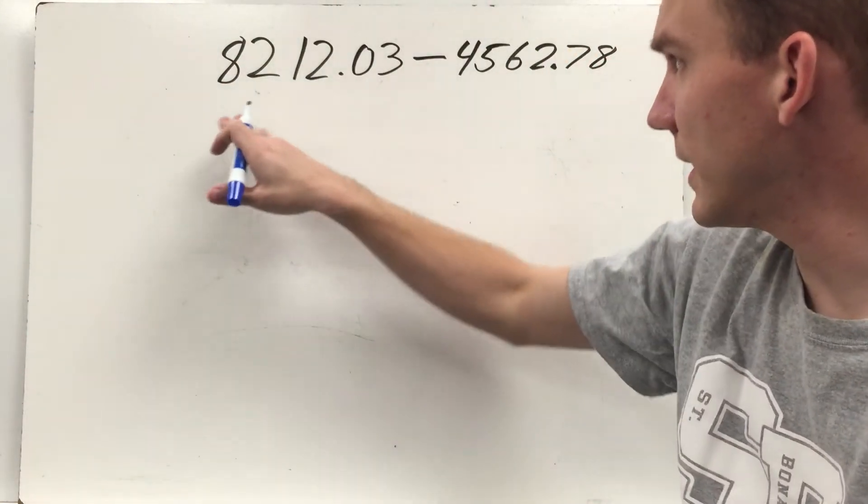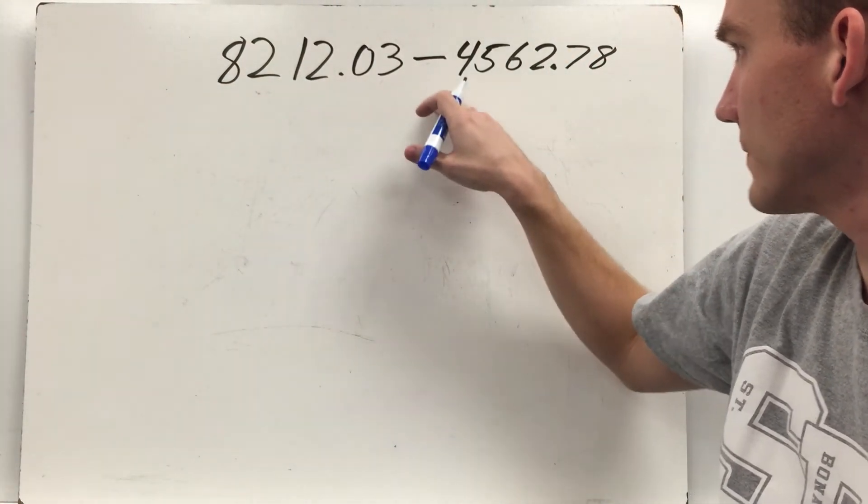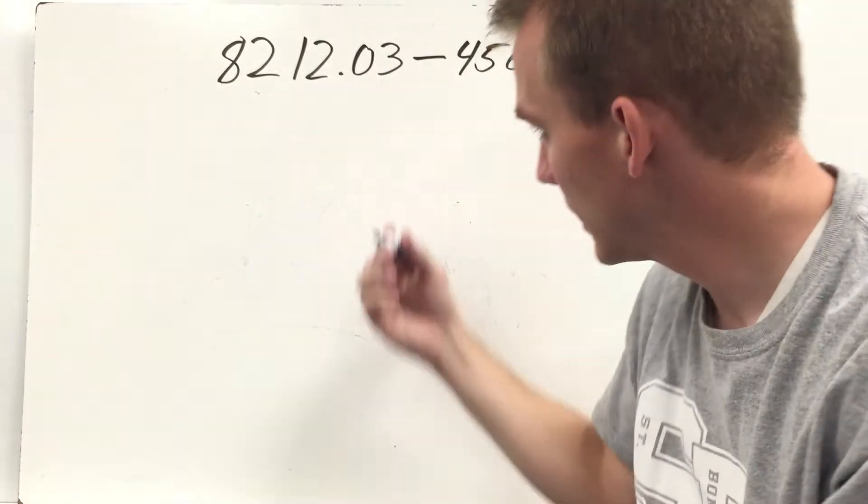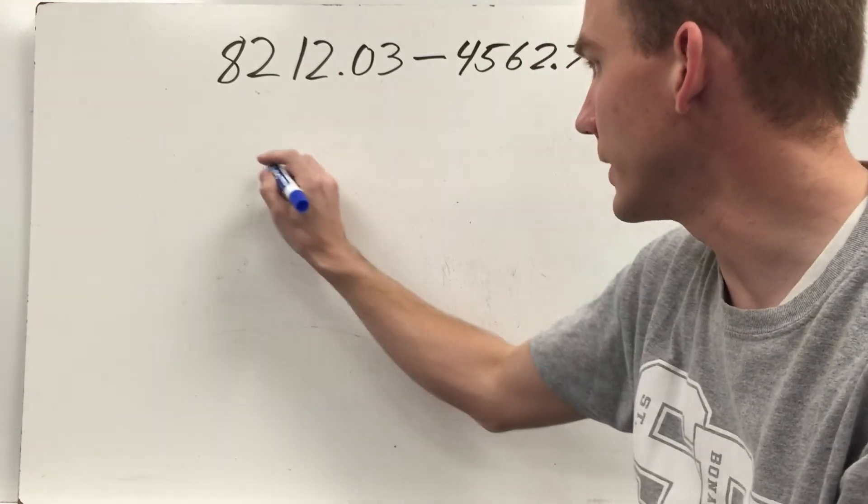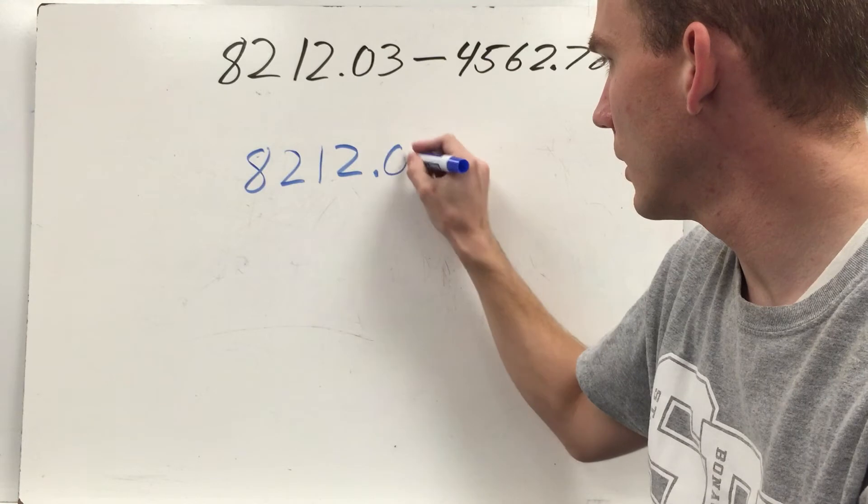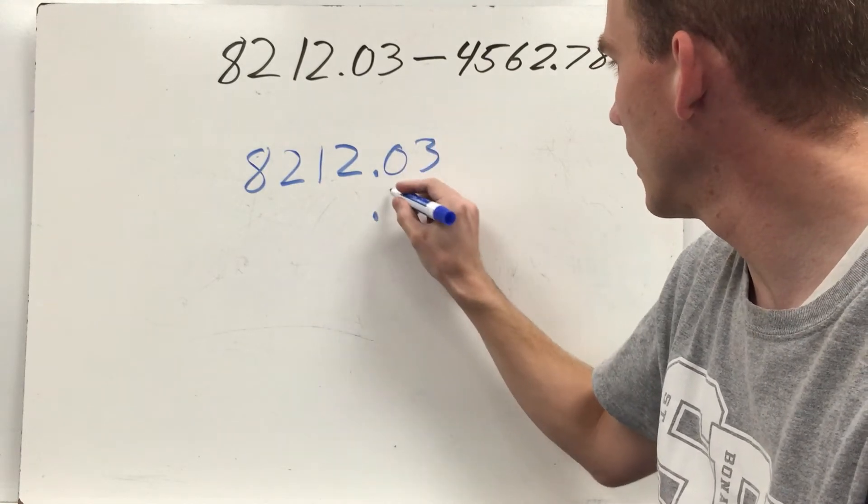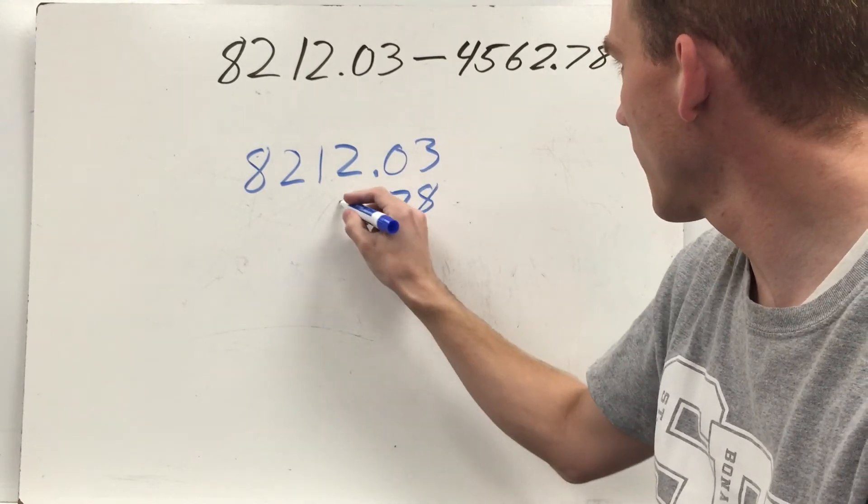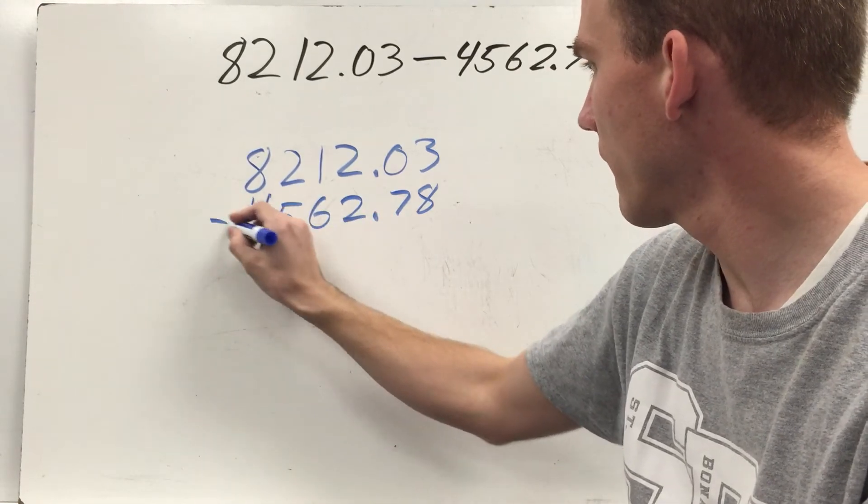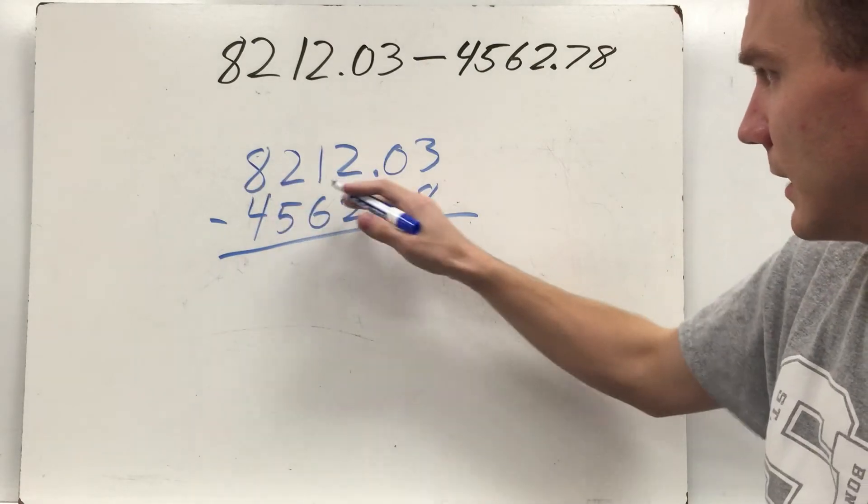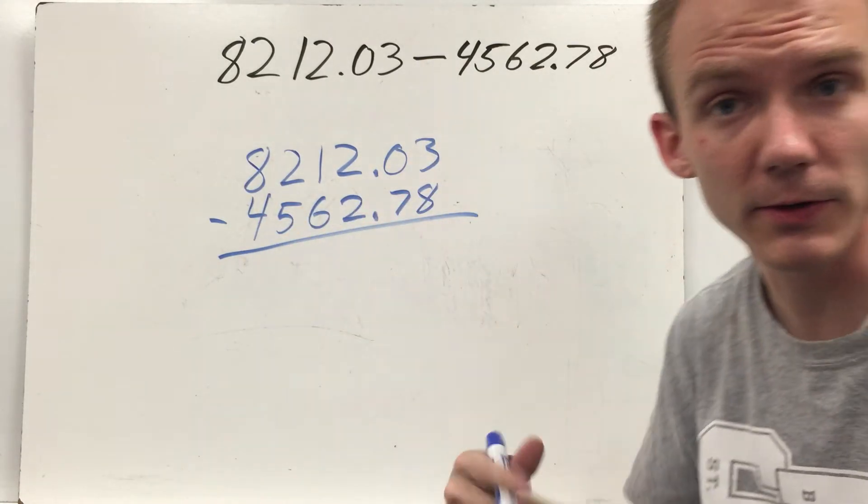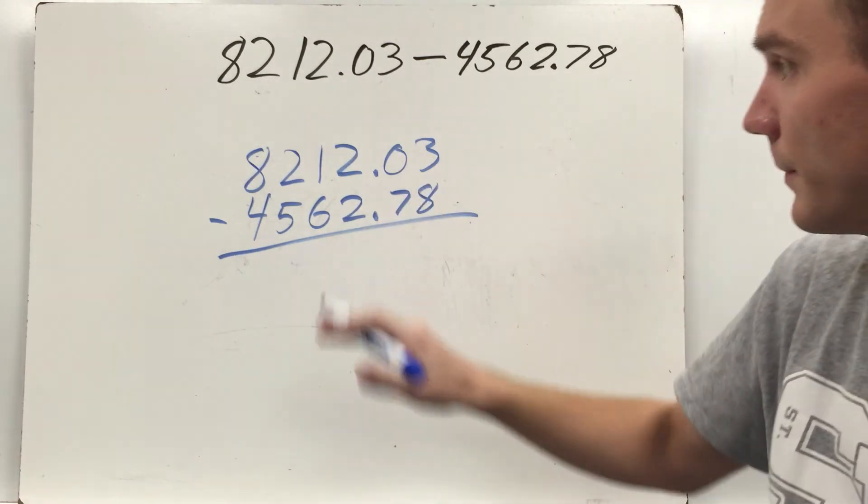This is a little bit bigger numbers here. We have 8,212 and three-hundredths minus 4,562 and seventy-eight-hundredths. First step, line up our decimal points. So now I subtract 8,212 and three-hundredths minus 4,562 and seventy-eight-hundredths. Copied it down, right?